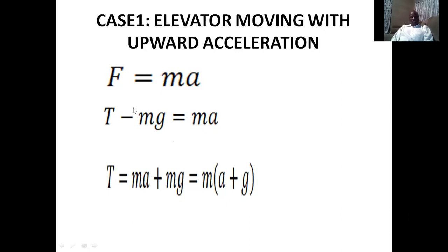We can rearrange this to find the tension — the force that enables the elevator to move upwards. Taking mg to the other side gives us T equals ma plus mg. We can factor out mass, so T equals m times (a plus g). The key concept here is that when an elevator is moving upwards, the force making it move upwards will be greater than the weight.